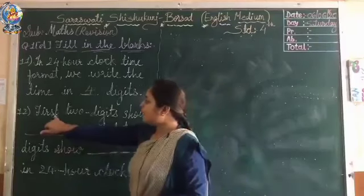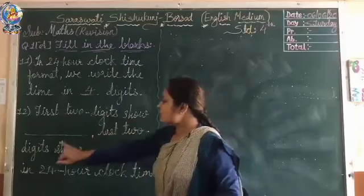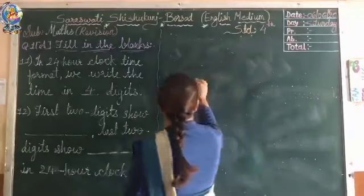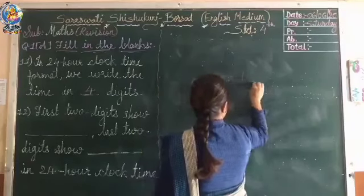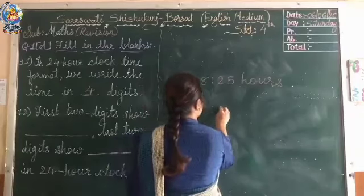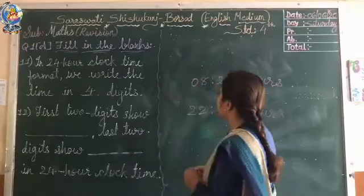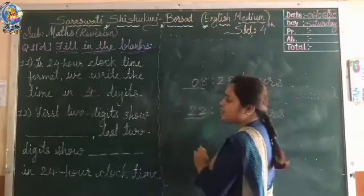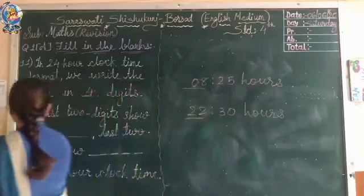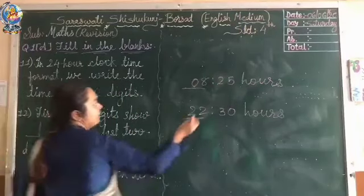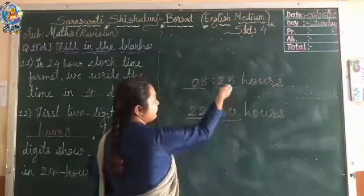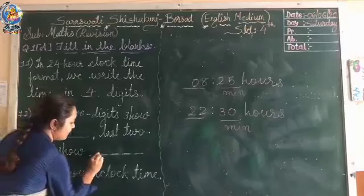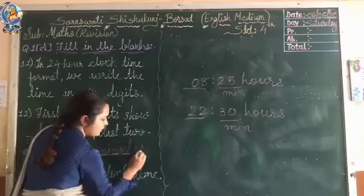The last blank question: first two digits show blank, last two digits show blank in twenty-four hour clock time. For example, 08:25 hours or 22:30 hours — the first two digits on your left side show hours. The last two digits on your right side show minutes. So the answers are hours and M-I-N-U-T-E-S, minutes.